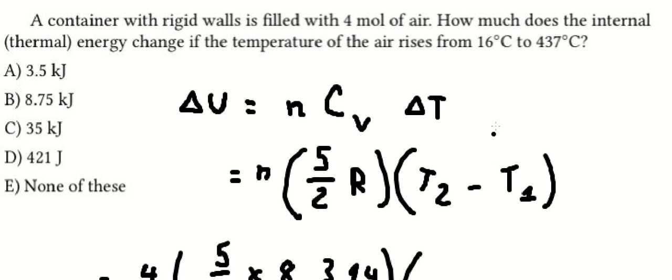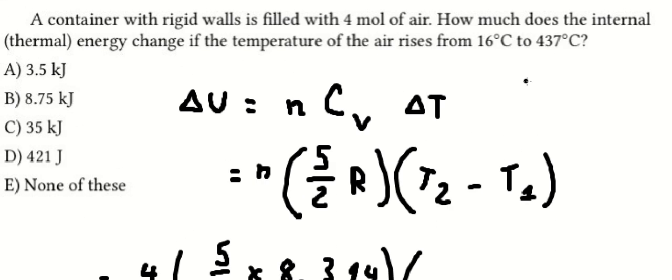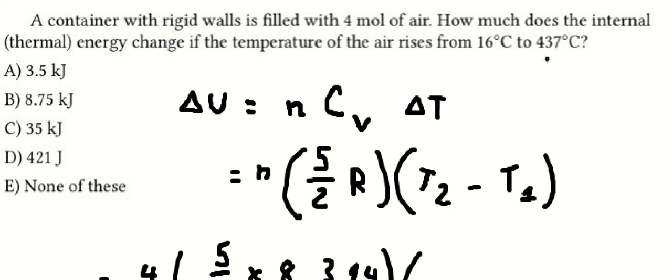The temperature you need to convert to Kelvin. So 437, we add about 273. Similar for this number. So this one we have 710. This one we have 289.